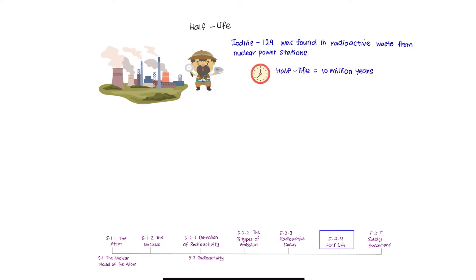Let's say an isotope iodine-129 was found in a radioactive waste from nuclear power station. Isotope-129 has a half-life of 10 million years. This sample of iodine has an activity of 288 kilo becquerel. What is the activity of the sample after 60 million years?